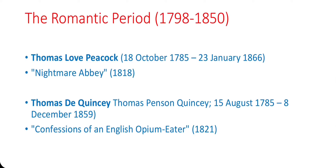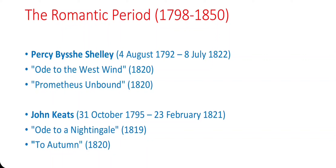Thomas Love Peacock — Nightmare Abbey (1818). Thomas De Quincey — Confessions of an English Opium-Eater (1821). Percy Bysshe Shelley — Ode to the West Wind (1820), Prometheus Unbound (1820). John Keats — Ode to a Nightingale (1819), To Autumn (1820).